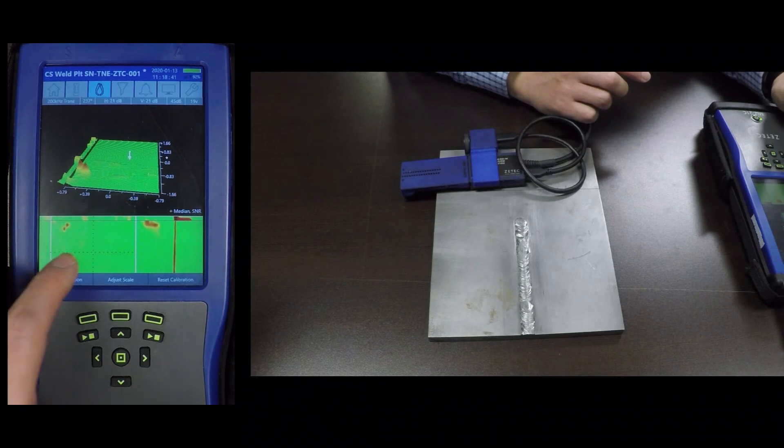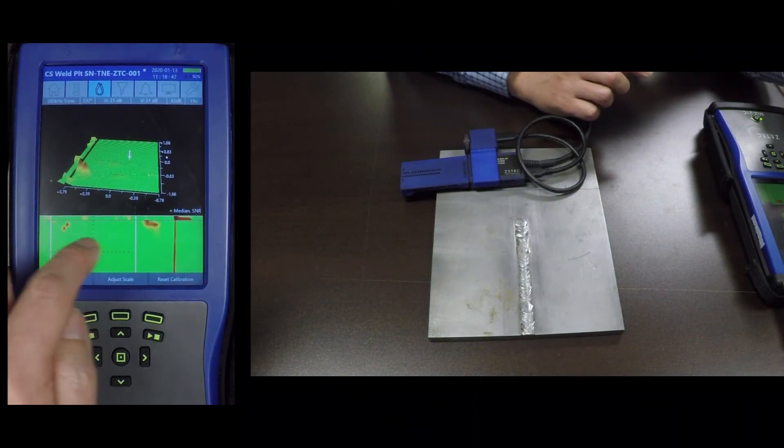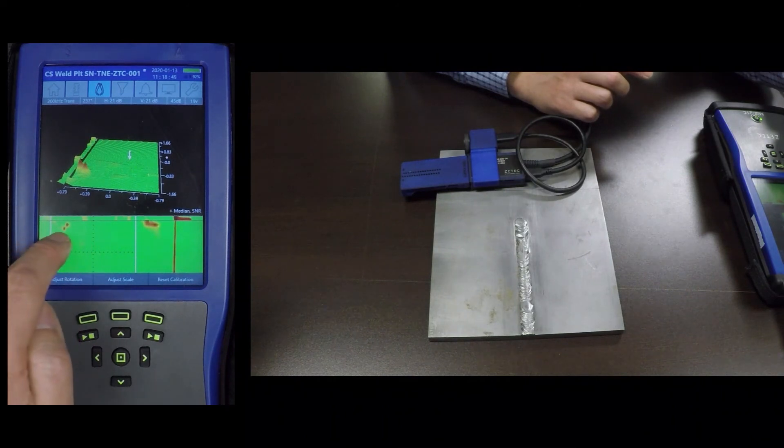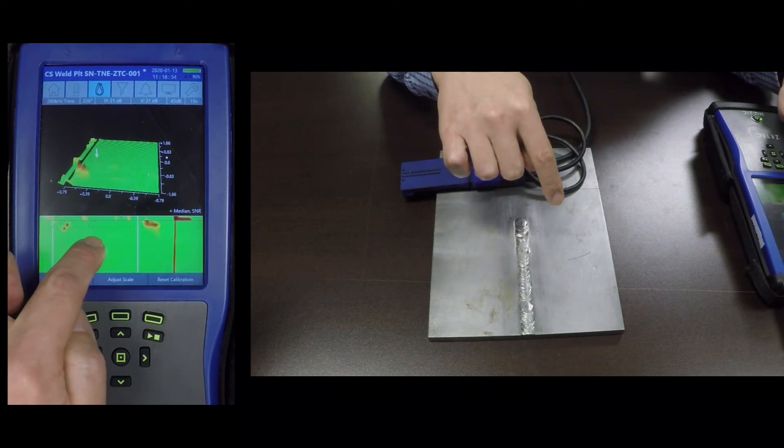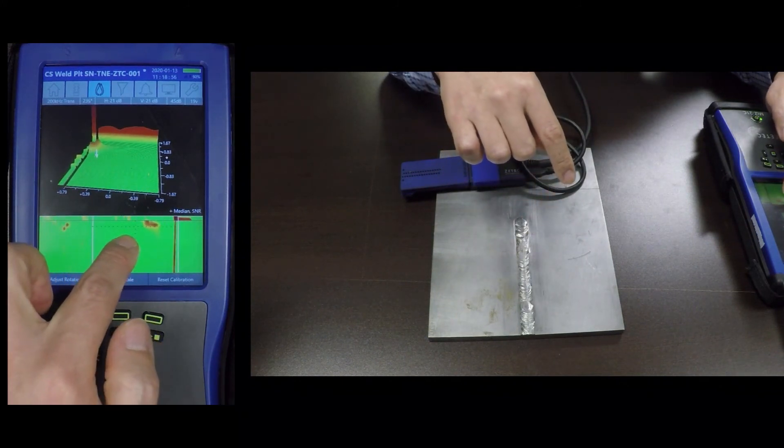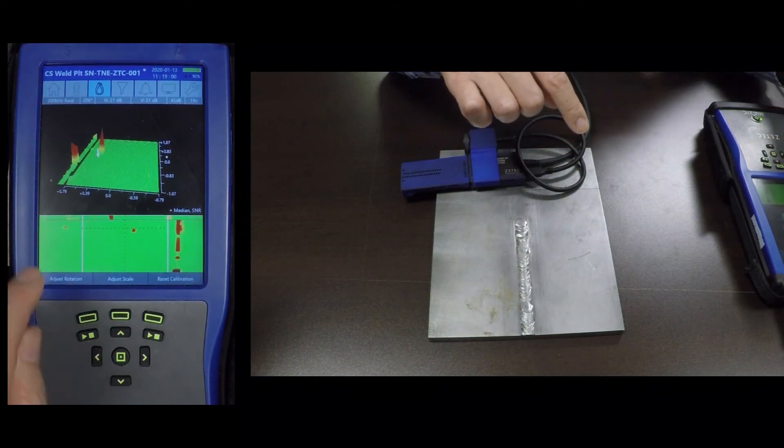And then you can see, this is my transverse channel. So transverse channel is picking out this 45 degree EDM notch here, but it's not really seeing anything else. If I go to my axial channel, now you can see...